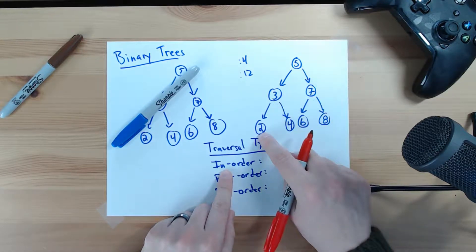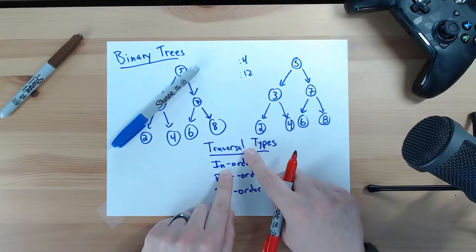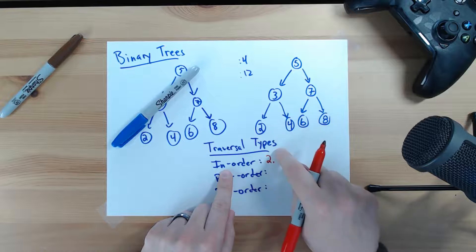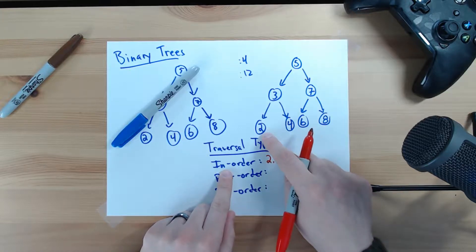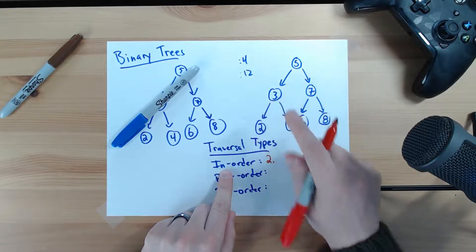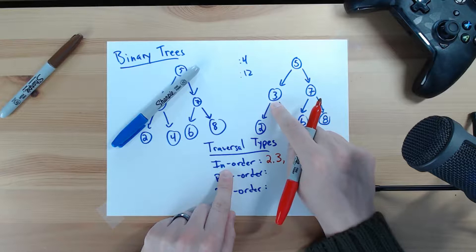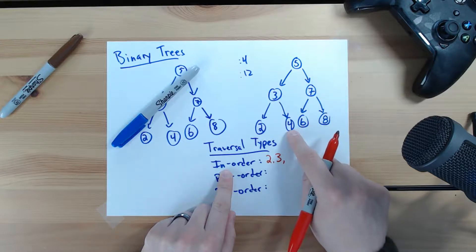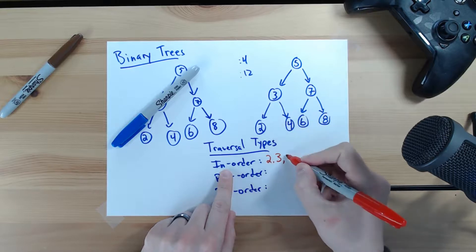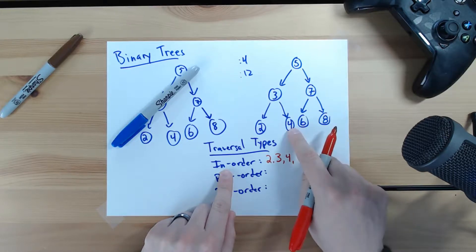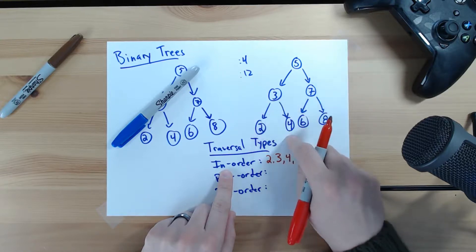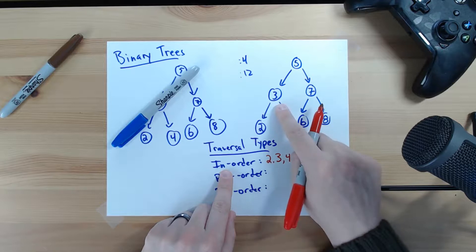The 5 goes to print the 3. The 3 goes to print the 2 to start. The 2 goes to print what's on its left, which is nothing. Then it prints itself — 2 — then goes to print what's on the right, which is nothing, so it's done. We go back to the 3, and the 3 says: I've printed everything to my left, so now I'm going to print myself — 3 — and then everything to my right. The 4 prints its left (nothing), itself — 4 — then its right (nothing). The 3 is done: it has printed its left, itself, and its right: 2, 3, 4.